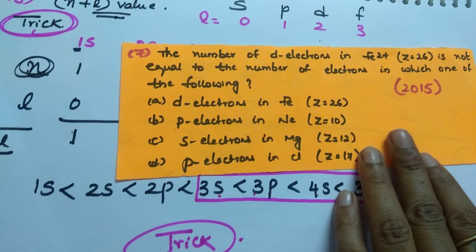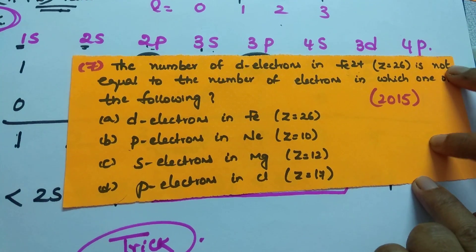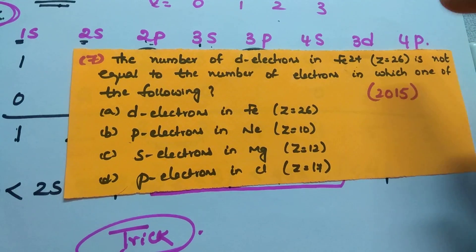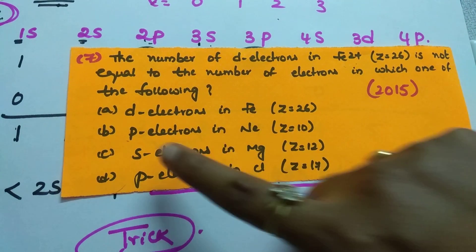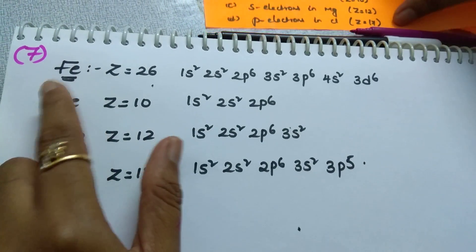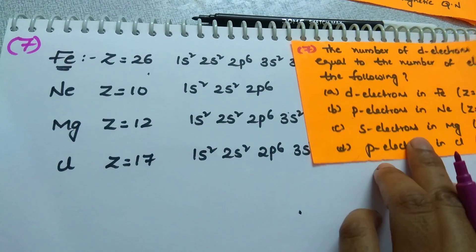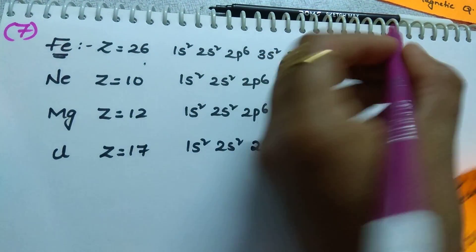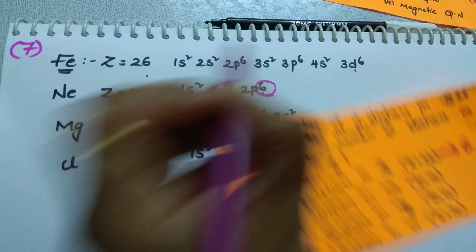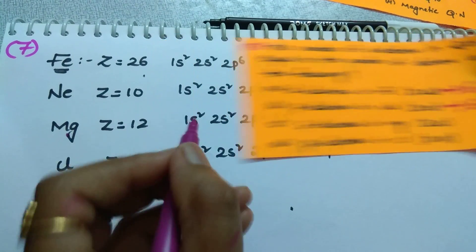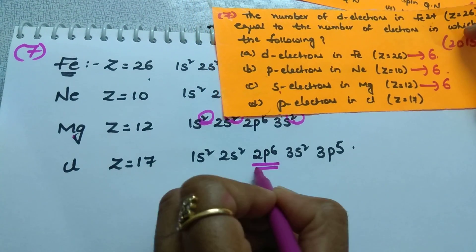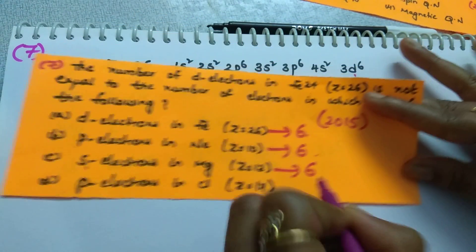See the next question: the number of d electrons in Fe²⁺ is not equal to the number of electrons in which of the following? First, calculate the number of d electrons in Fe²⁺. Then compare with: d electrons in Fe²⁺, p electrons in neon, s electrons in magnesium, and p electrons in chlorine. I wrote the electronic configurations for all given options to save time. The d electrons in Fe: count gives 6. In neon, the p electrons: 6. In magnesium, the s electrons: 2+2+2=6 total. In chlorine, the p electrons: 6+5=11.